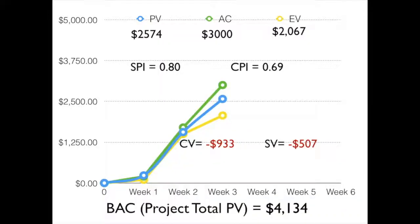Let's look at the example we've been using so far, where we have a planned value at this particular point in time, at the end of week 3, of $2,574. We have an actual cost of $3,000 and an earned value of $2,067. Our total planned value, or BAC, for the project is $4,134.